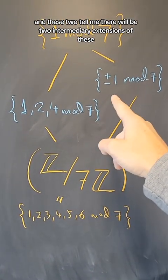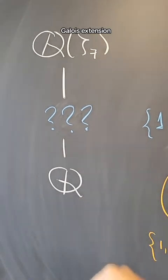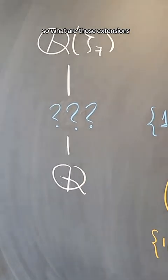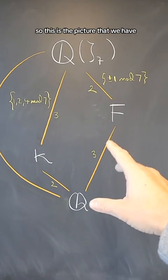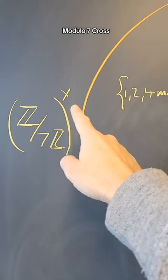And these two tell me there will be two intermediary extensions of this Galois extension. So what are those extensions? This is the picture that we have. This is our full extension, which is Galois with Galois group (Z/7Z)×.